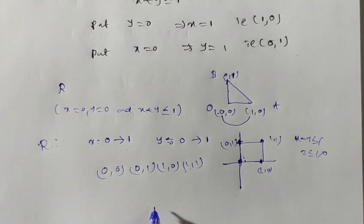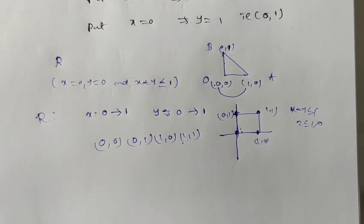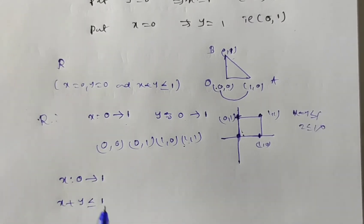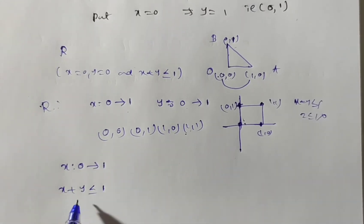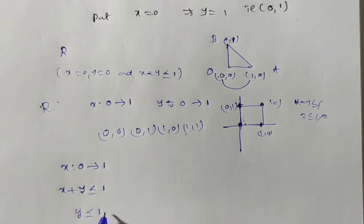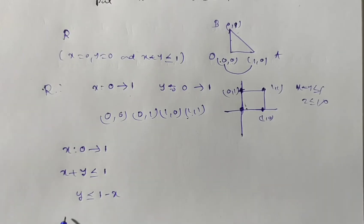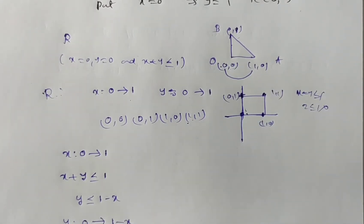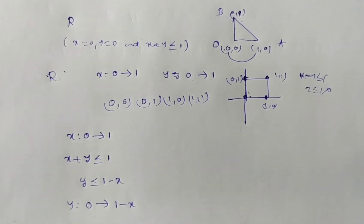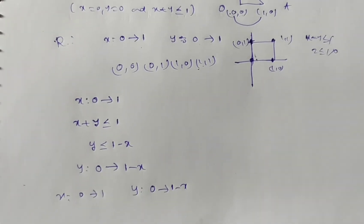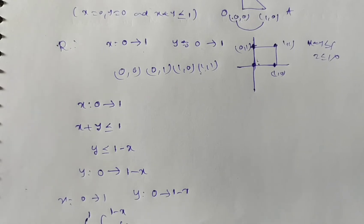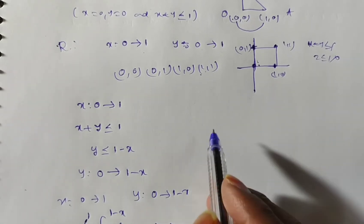So there are two cases. Method 1: take x as independent, x from 0 to 1. From x plus y less than or equal to 1, y is less than or equal to 1 minus x. So y goes from 0 to 1 minus x. Therefore the limits of x are 0 to 1 and limits of y are 0 to 1 minus x.